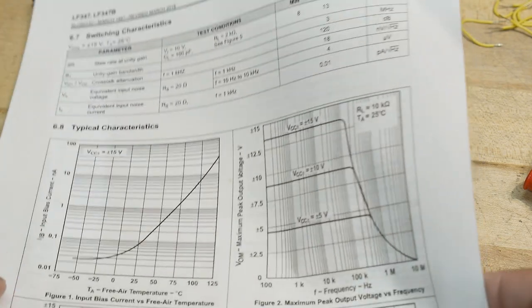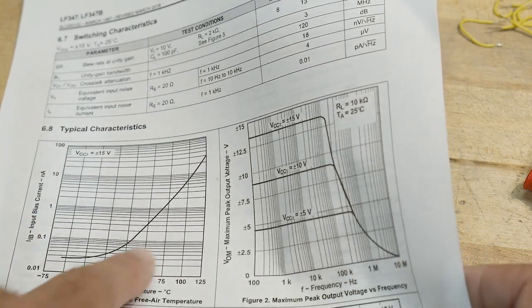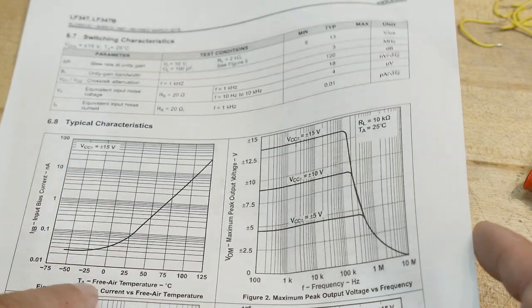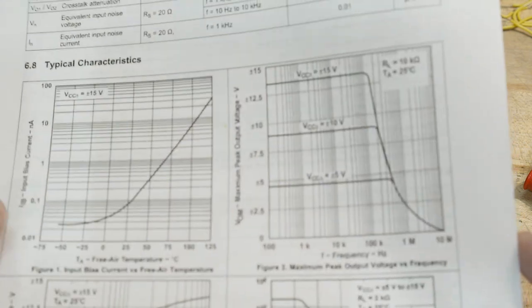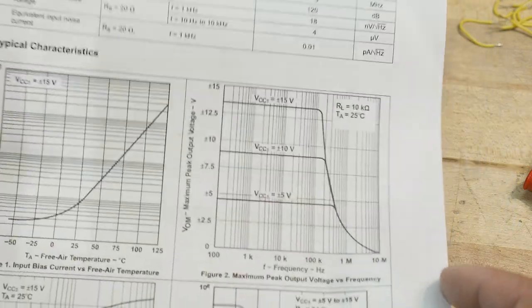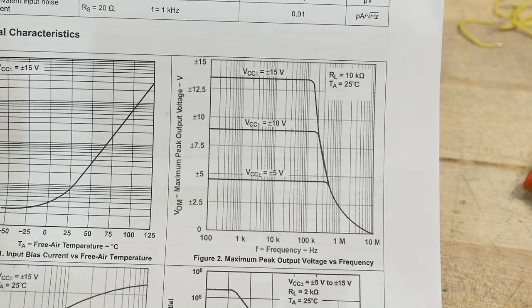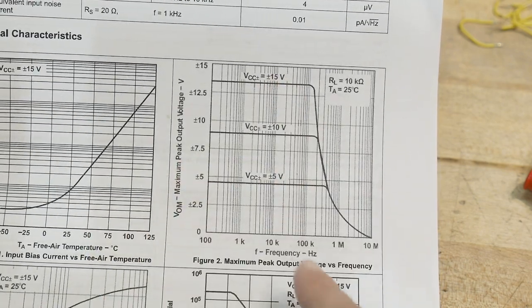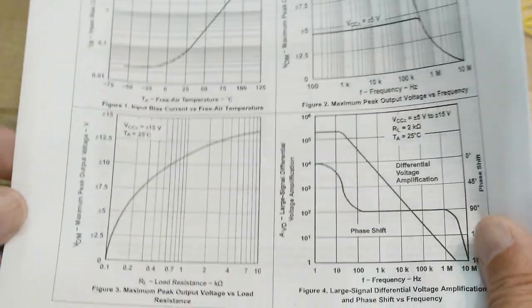What else do we need to know? I didn't print up the entire datasheet, just part of it. Input bias current goes up with temperature, of course. Maximum peak output voltage versus frequency, here's the drop off. Plus or minus 15 volts starts dropping off, alright, load resistance.